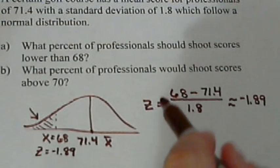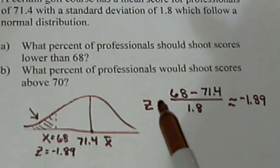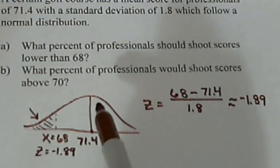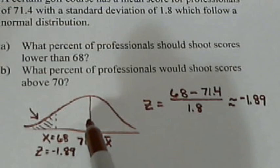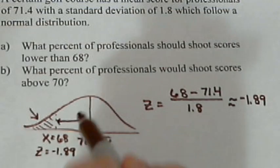Now we look this up on our z table. Now depending on what z table you have, you may have to look it up differently. The one I'm using, the one we use in class, will give us the percent from the mean over to this number. So the percent gives you this percent here.